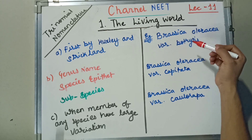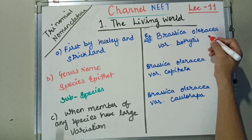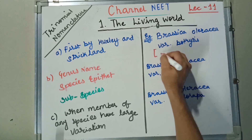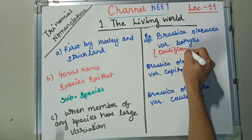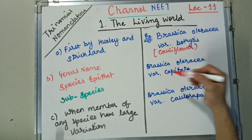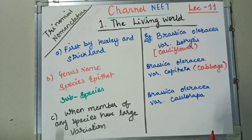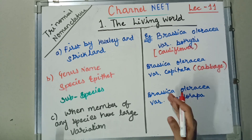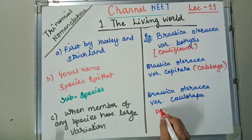Brassica oleracea var. Botrytis is the name given to Cauliflower. Brassica oleracea var. Capitata is the name given to Cabbage. Brassica oleracea var. Colorapa is the name given to Wild Cabbage.